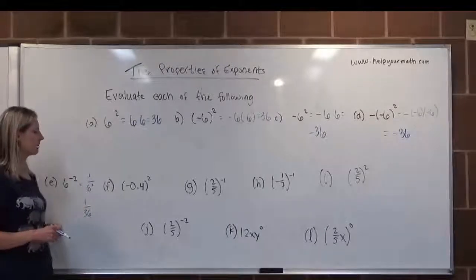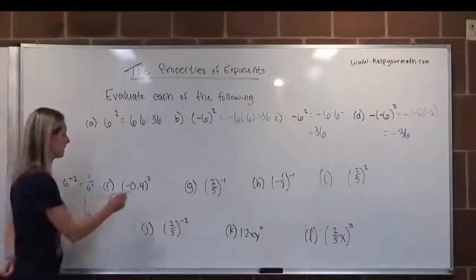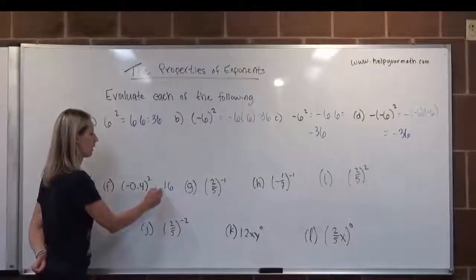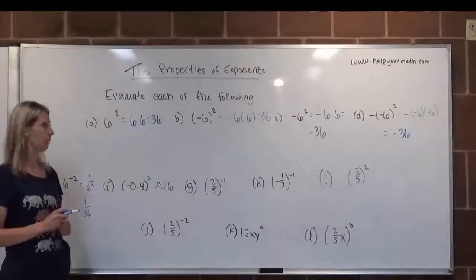Here at letter F, we have negative 0.4, or negative 4 tenths, quantity squared. That's negative 4 tenths times negative 4 tenths. 4 times 4 is 16, 1 tenth times 1 tenth is 1 one-hundredth. And negative times negative is positive, so it would be 16 hundredths, or 0.16.